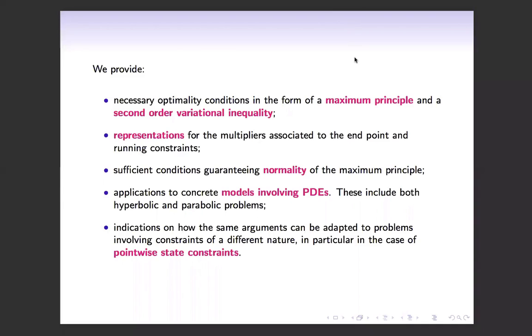In this work, we use tools of second-order variational analysis to derive necessary conditions for a local minimizer. They include a maximum principle and a second-order condition in the form of an integral variational inequality. We provide representations for the multipliers associated to the constraints. Concerning the multiplier associated to the cost, we provide sufficient conditions for the normality of the maximum principle.